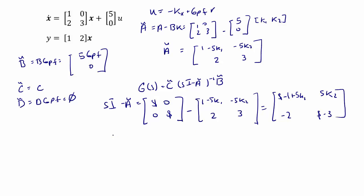And now we're ready to find the inverse. s i minus a tilde inverse is equal to 1 over [(s minus 1 plus 5k1) times (s minus 3) plus 10k2] times the transpose and adjoint [s minus 3, negative 5k2; 2, s minus 1 plus 5k1].